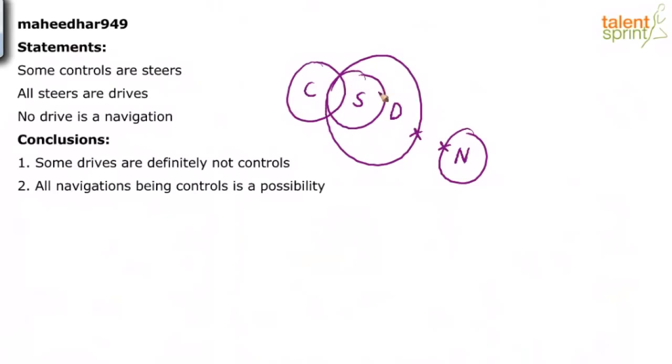So, some controls are steers, all steers are drives, no drive is a navigation — that's the basic diagram. If required, we will draw possible diagrams; otherwise, we will not do that.